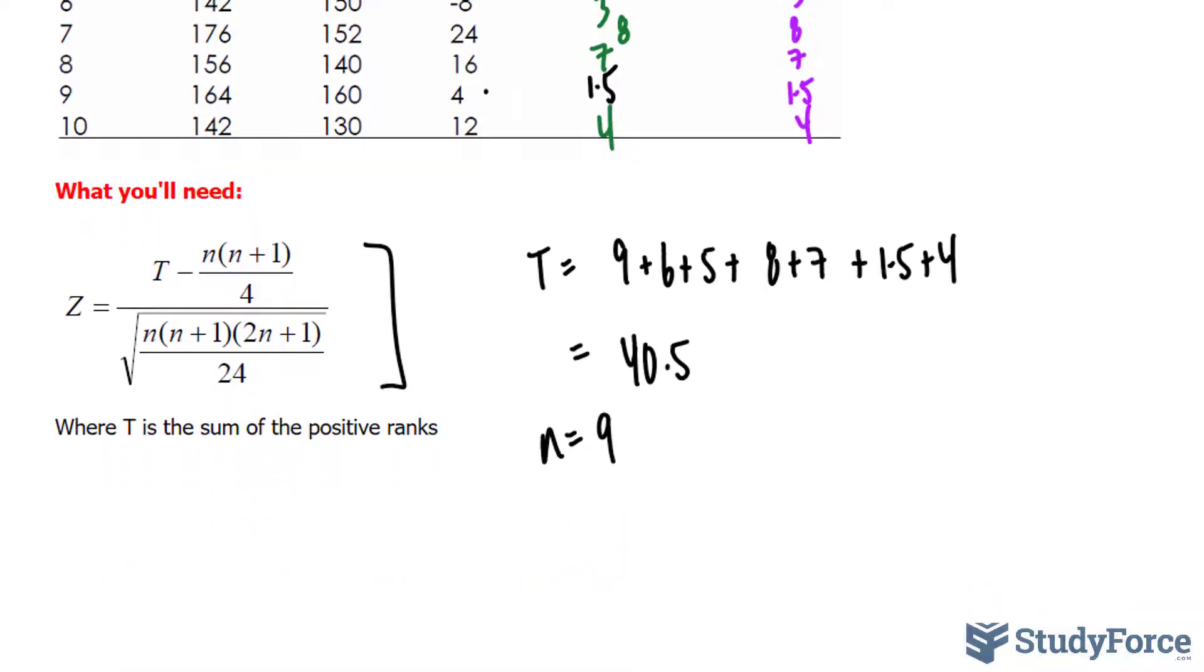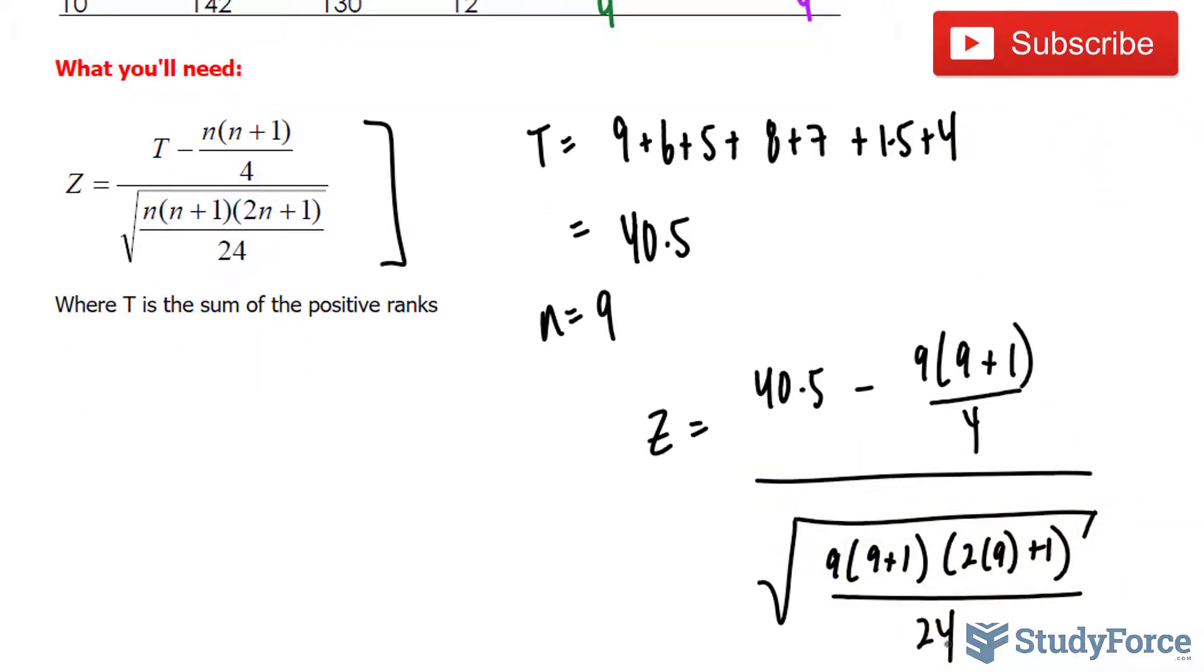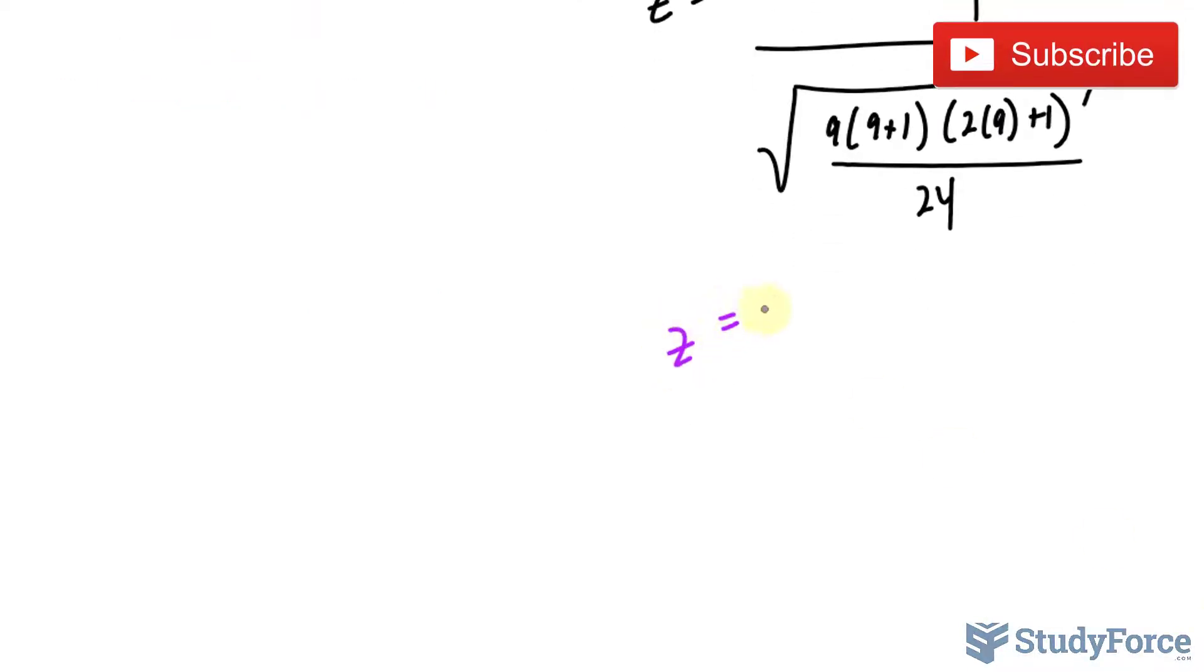Your equation should look like this. If you type this into your calculator correctly, your z value should be 2.13.